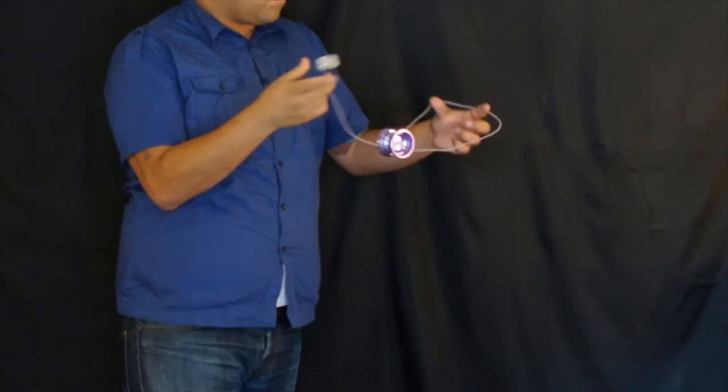Now we're going to do the world's smallest Eli Hop. That's required because it creates a little bit of that slack movement even though the yoyo has barely come off the string at all.